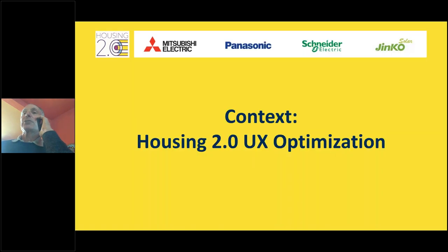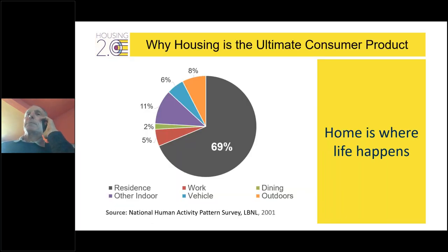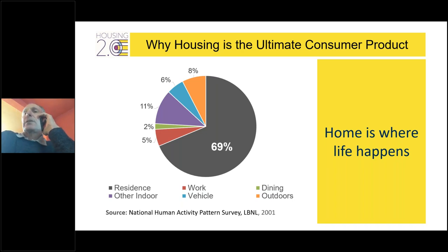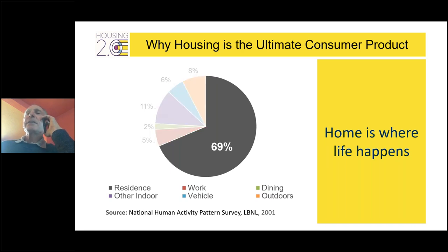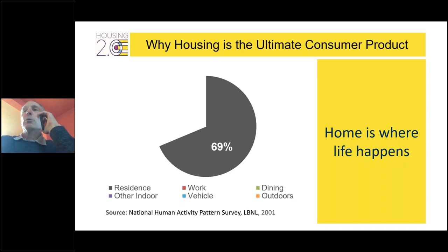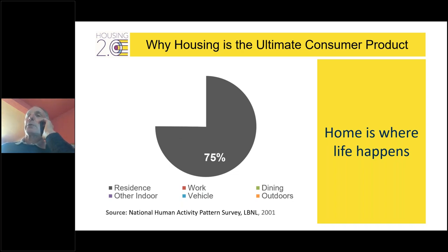Context for the Housing 2.0 user optimization begins with this key data point — how time is spent every day for adults in this country. We spend time in our homes, at work, dining, outdoors, and in vehicles. The key point is that nearly 70% of our time is spent in our homes. Homes are where life happens, and post-COVID that estimate may be 70–75% as more people work from home.